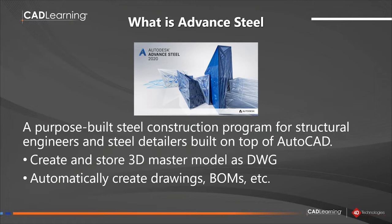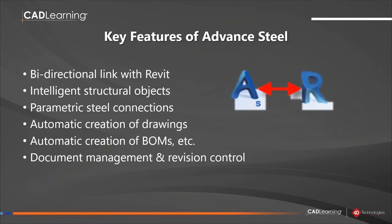While you can do all of the work inside Advanced Steel, the real synergy comes about when you use Advanced Steel in conjunction with Revit. Some key features: it has a bi-directional link with Revit, so you never have to reproduce information in both programs. Both utilize intelligent structural objects and parametric connections. Advanced Steel enables automatic creation of drawings — it generates all the fabrication drawings for you without any manual drawing — plus automatic bills of materials and complete document management and revision control.